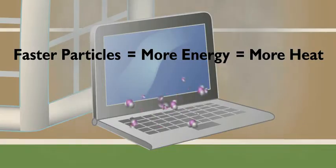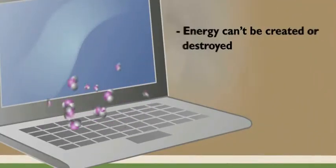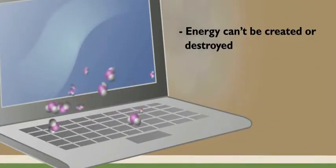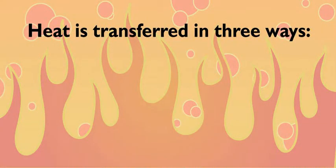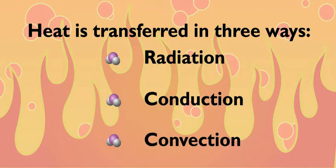Where does all that energy come from in the first place? It's always there. Energy can't be created or destroyed, but it's constantly moving around the universe in and out of different matter. Heat is transferred in three different ways: radiation, conduction, and convection.